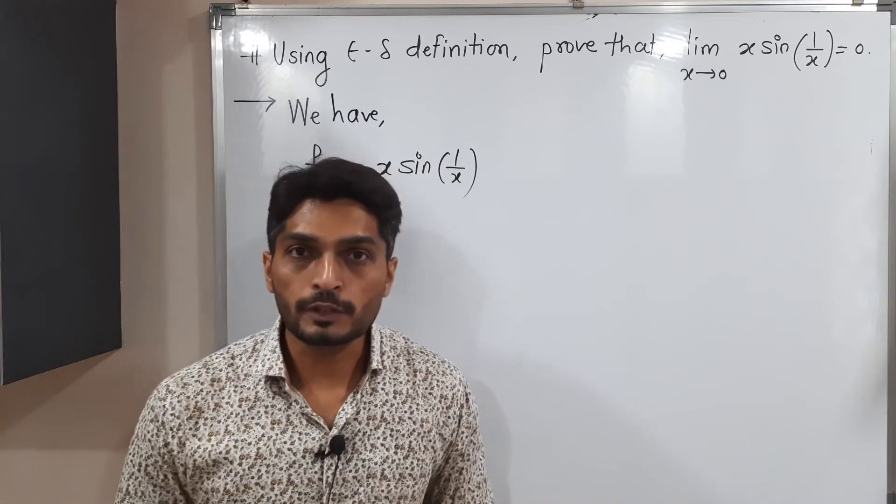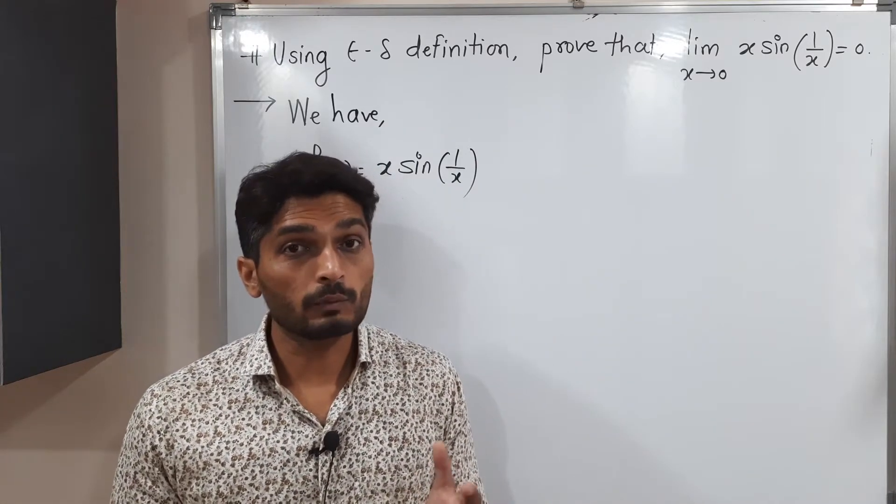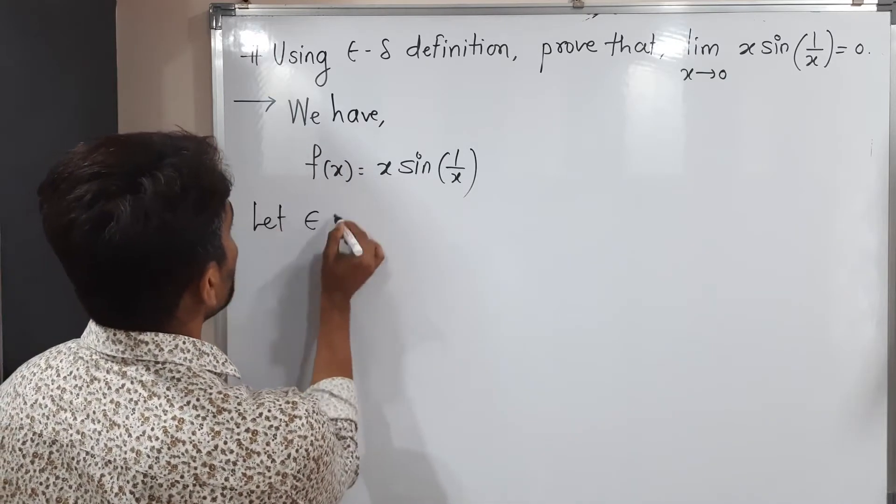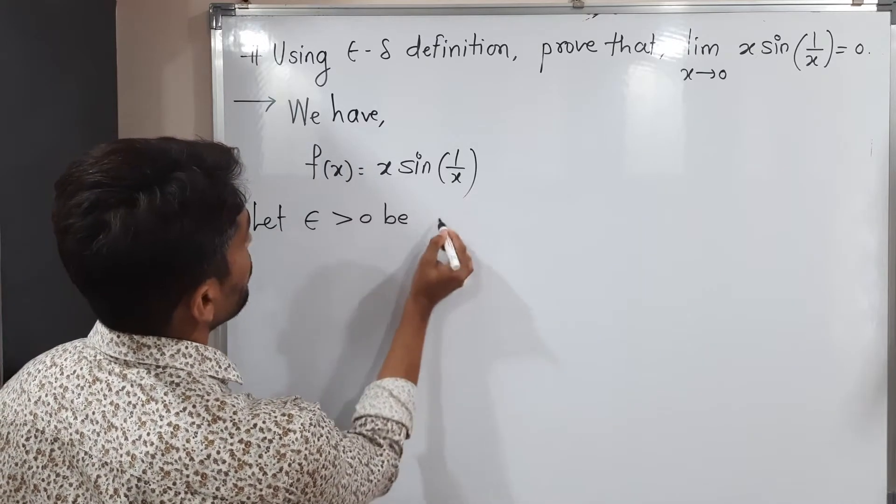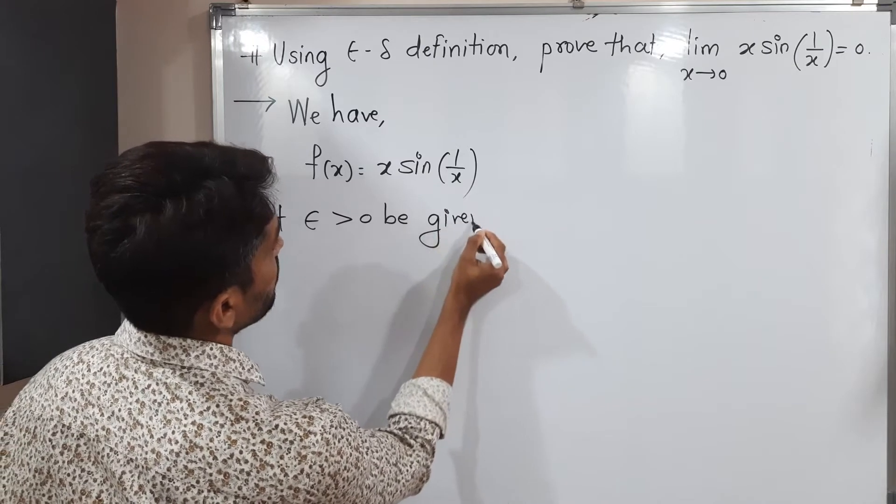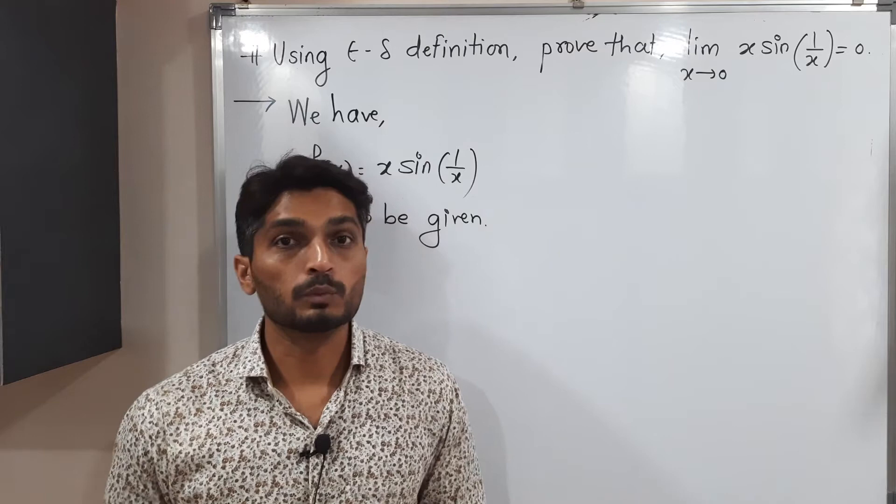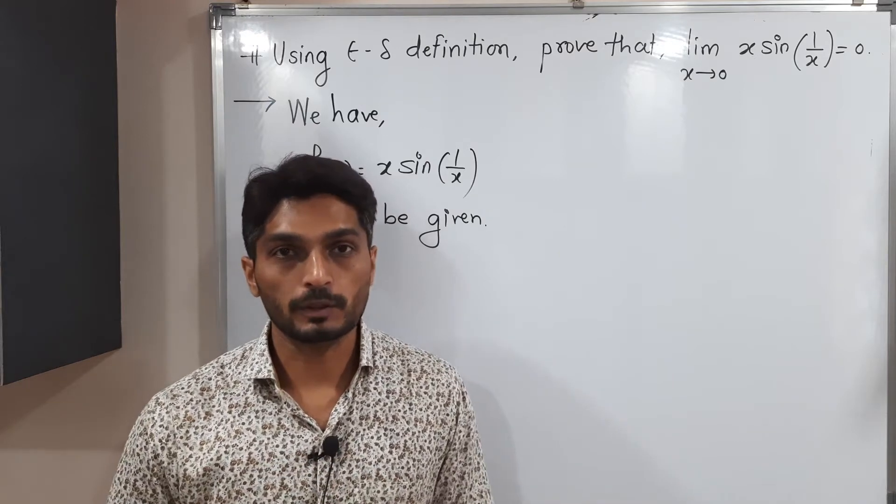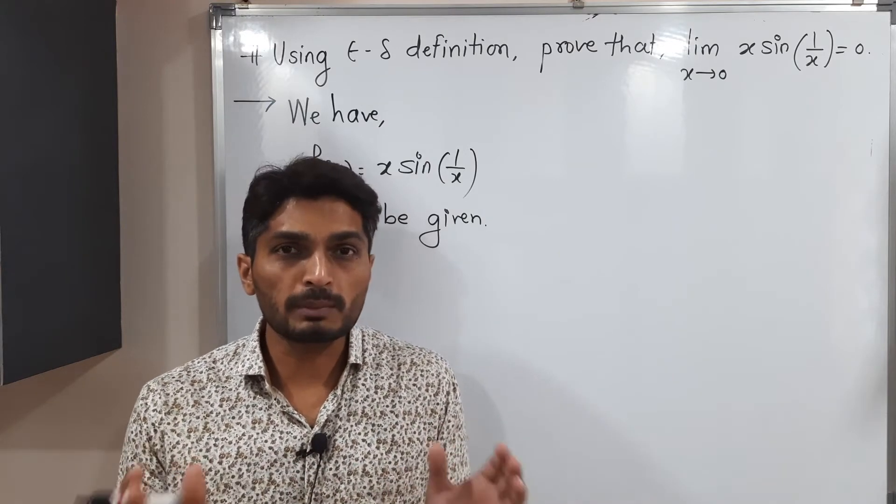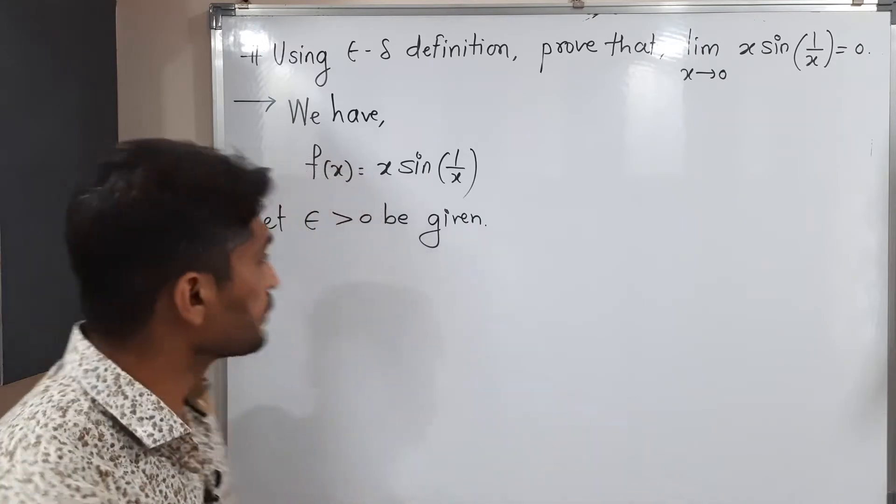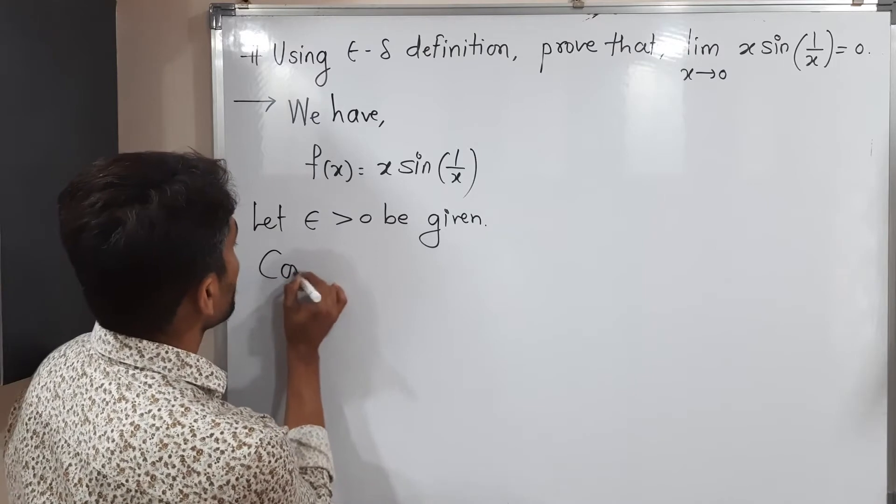Using epsilon delta definition, we have to prove. So I will take one epsilon first. Let epsilon greater than 0 be given. For this epsilon, we have to select delta which will satisfy the definition. But before that, we will do some calculation and we will predict about delta.